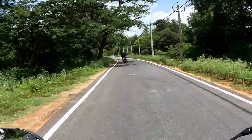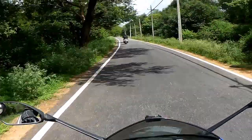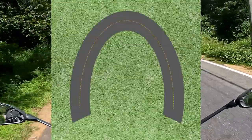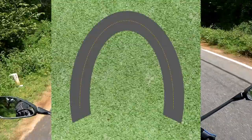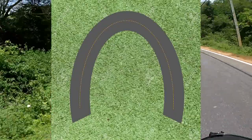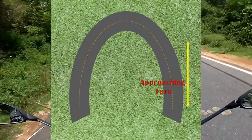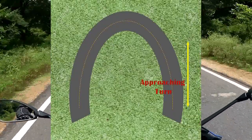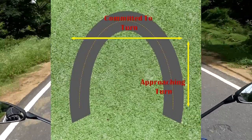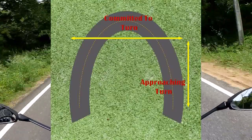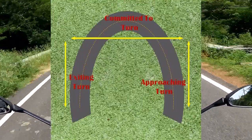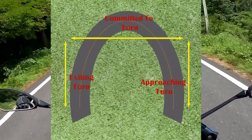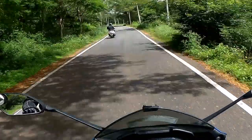I will divide this turning track into three parts. The first is the point where you are approaching the turn. The second is when you are actually taking the turn. And the third is when you are exiting the turn.